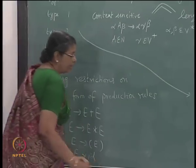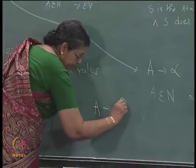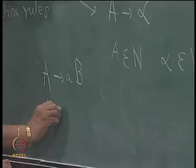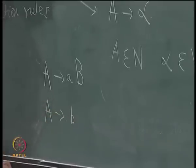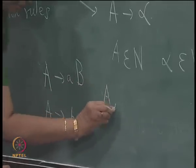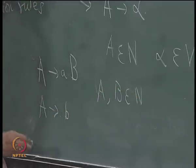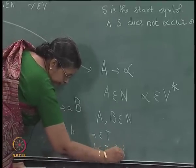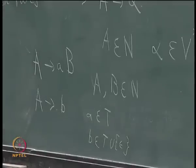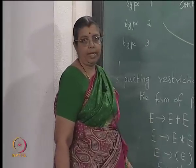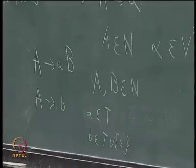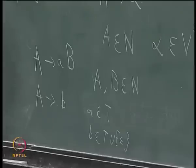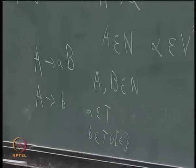Type 3, the most restricted, has rules of the form A goes to a or A goes to aB, where A and B are non-terminals, a is a terminal, and it can also be epsilon. This is called a regular grammar. There are right-linear and left-linear versions, which are all equivalent in power.